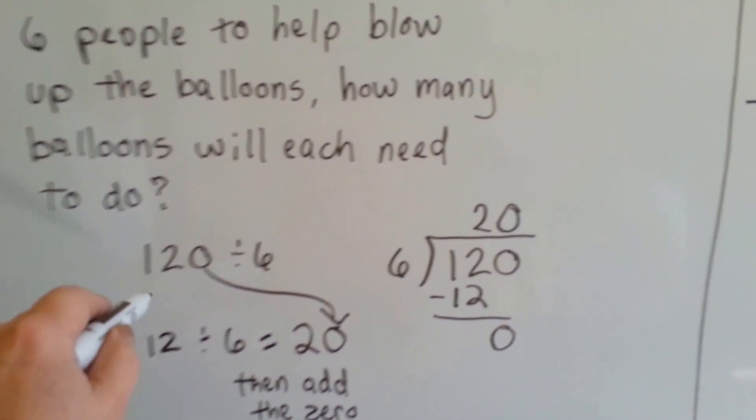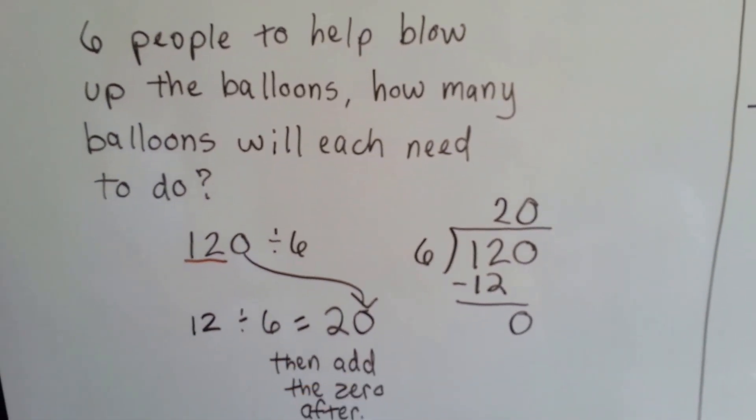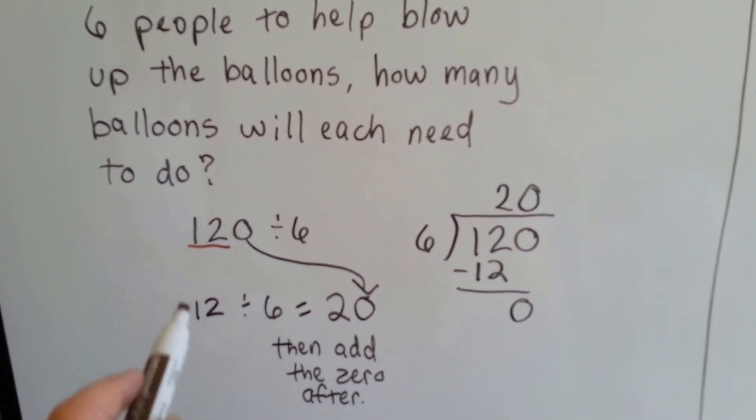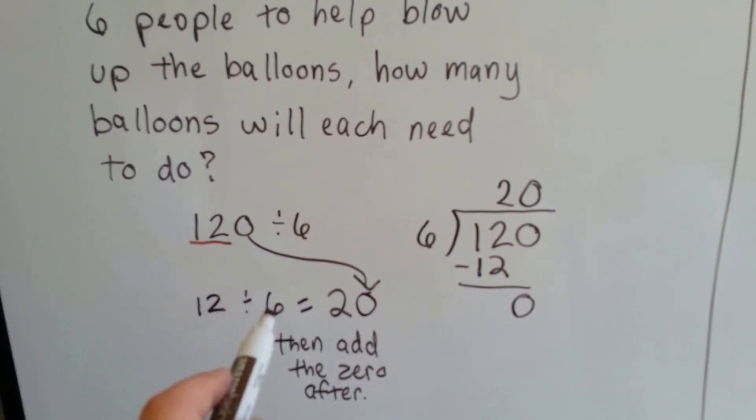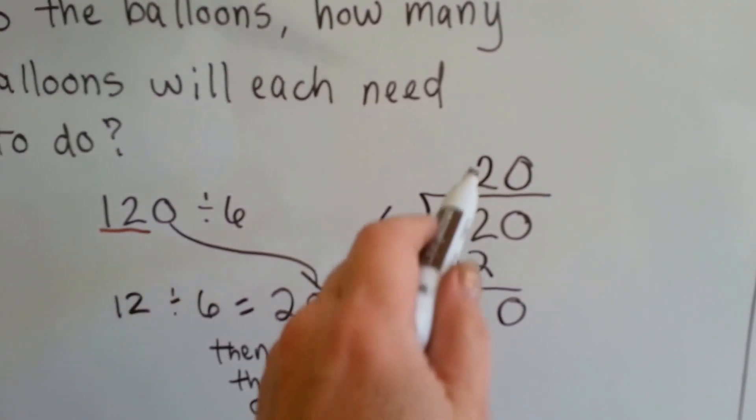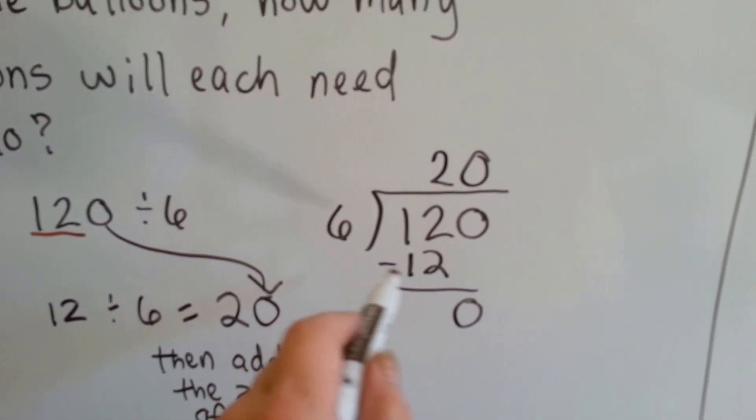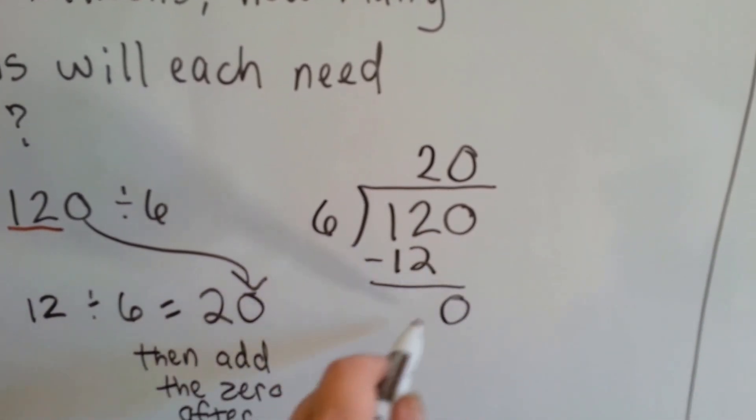We do 12 divided by the 6 and add the 0 at the end. It's easier to say 12 divided by 6 is 2. 6 goes into 12 2 times. 6 times 2 is 12.